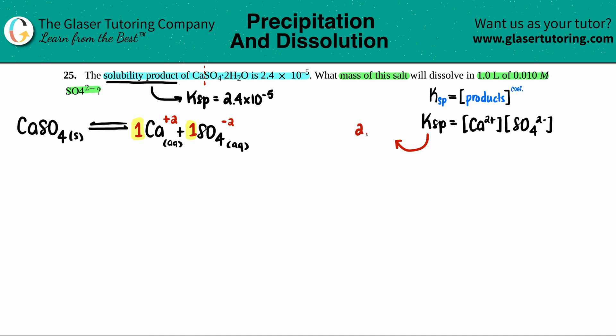They're both raised to the first because they both have no coefficients in the front. That means that there's just one of each. So I can raise these to the first, but that's the same as if I'm not writing anything. And now let's just see what we can plug in here. The Ksp value they told us was 2.4 times 10 to the negative fifth. But now I don't really know what the concentrations of these are. So I'm going to go back to my balanced equation and see if I could work it out. I have to use variables. But I noticed that it says that it's going to dissolve in a 1 liter of 0.010 molarity of SO4 2-.